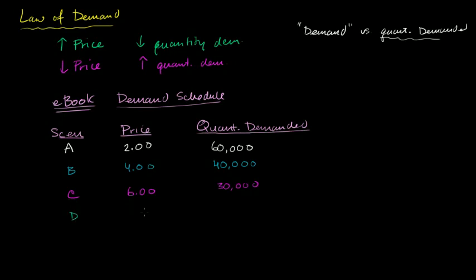And I'll do a couple more of these. Scenario D, I raise another $2, so I get to $8 now. Now the quantity demanded goes down to 25,000.